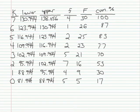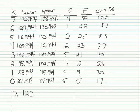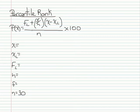To compute a percentile rank from a group frequency distribution, we follow very similar procedures to the ones we did with the percentile. In this particular example, I want to find the percentile rank of a score of 120 — so, what percentage of scores lie below 120? The equation for the percentile rank is shown here, and we have to find each of the quantities in this equation in order to solve it.